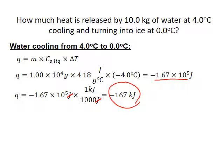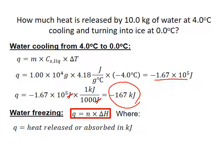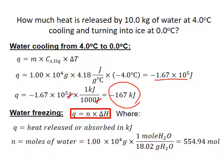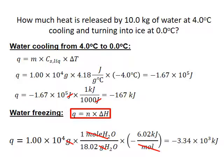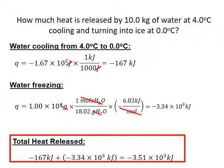The second part of this process is a phase change — water freezing. We use the enthalpy formula Q equals N times delta H. N is the moles of water, calculated from the mass by dividing by the molar mass of water. Delta H for freezing is negative 6.02 kilojoules per mole. Plugging these values into the formula yields negative 3.34 times 10 to the third kilojoules of heat released. Adding the heat released in each process together gives a total heat release of negative 3.51 times 10 to the third kilojoules. Notice that most of the heat released again comes from the phase change — in this case, the freezing of water.